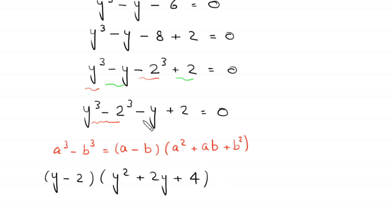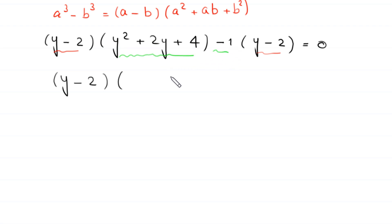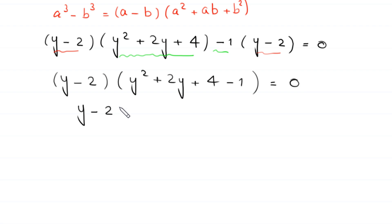From the terms -y + 2 we factor out -1, giving -1·(y-2). We then factor out (y-2) from both groups, leaving (y-2)·[(y² + 2y + 4) - 1] = 0, which simplifies to (y-2)·(y² + 2y + 3) = 0.